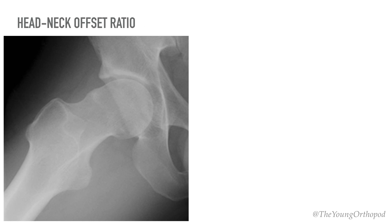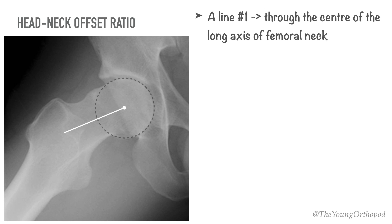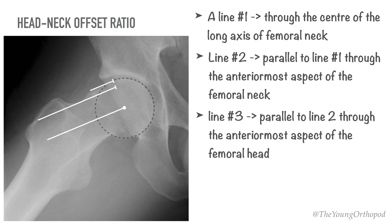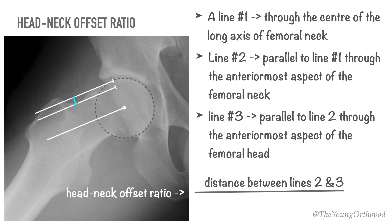The head-neck offset ratio is measured from the cross-table lateral view with the hip in 10 degrees of internal rotation. A line is drawn through the center of the long axis of the femoral neck. A second line is drawn parallel to the first through the anteriormost aspect of the femoral neck, and a third line parallel to the second through the anteriormost aspect of the femoral head. The ratio is calculated by measuring the distance between lines two and three, divided by the diameter of the femoral head. A ratio of less than 0.17 indicates a likely cam deformity.